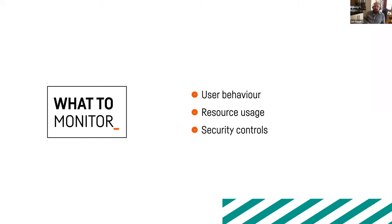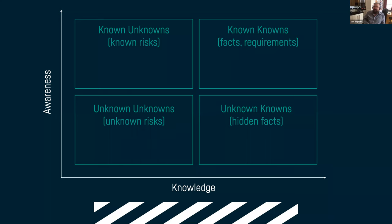From an operations perspective, some of you may have seen this framework attributed to Rumsfeld. The basic premise: there are known knowns — facts you can point to and say 'I know this to be true.' There are unknown knowns — things your organization might know but that aren't broadly understood. There are known unknowns — things you know to be risks. And there are unknown unknowns — risks that exist that you haven't even thought about.